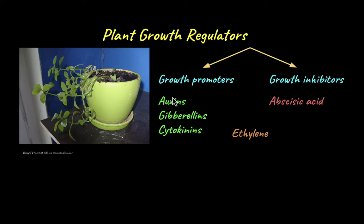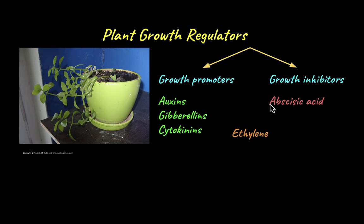In a previous video we spoke about plant growth regulators, specifically growth promoters — auxins, gibberellins and cytokinins. In this video we will focus on ethylene, which fits in both the growth promoting category and the growth inhibiting category, and also abscisic acid, which is the main plant growth inhibitor.